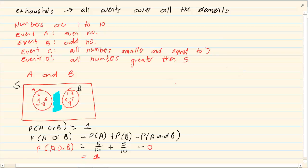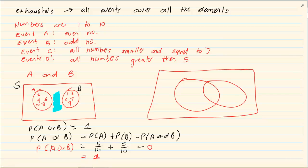Now let's take the events of C and D. Now event C is all the numbers smaller and equal to 7. Now smaller than and equal to 7 means 1, 2, 3, 4, 5, 6, 7. But look, event D is all the numbers greater than 5. So there is obviously an overlap.